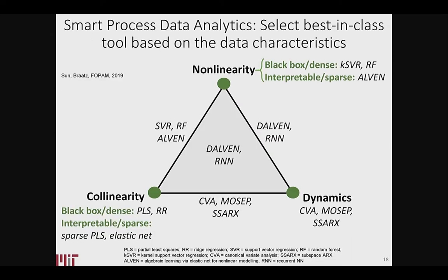By the way, the things on the edges of the triangle mean non-linearity and dynamics — that determines which method to use. We also account for metadata and ask questions like interpretable versus non-interpretable. A lot of the ideas discussed back in the 70s and 80s in chemical engineering, we basically just put into our expert system.